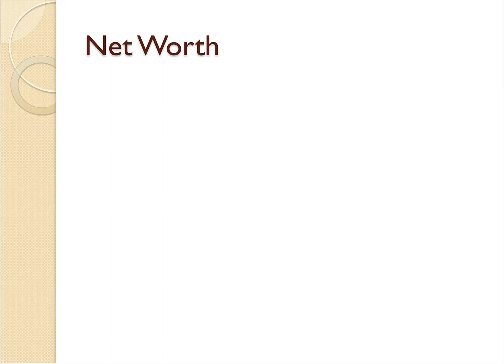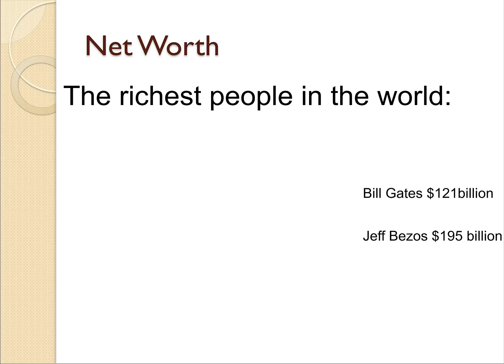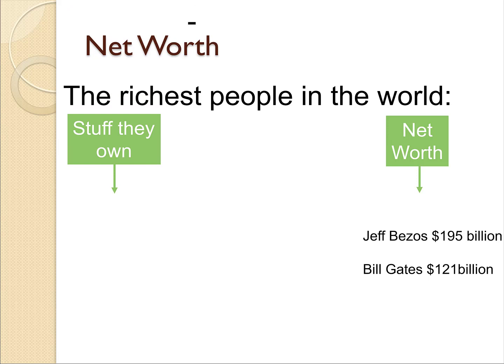Before we start talking about the accounting equation, let's talk about something related to it: the list of richest people in the world. Here are the current top two. Jeff Bezos of Amazon is currently the richest at 195 billion. So what is 195 billion called? It's called net worth. How do you think they calculate net worth? It's actually pretty simple. You take the stuff that they own minus the stuff that they owe.